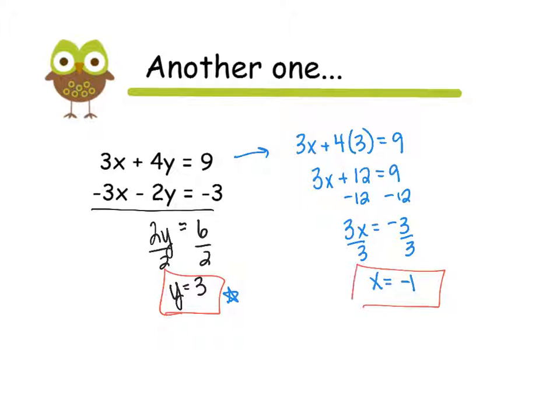Again, this is an ordered pair. So I need to write it as such. So the x-coordinate goes first. It's negative 1. My y-coordinate is 3. So my solution is negative 1, 3.